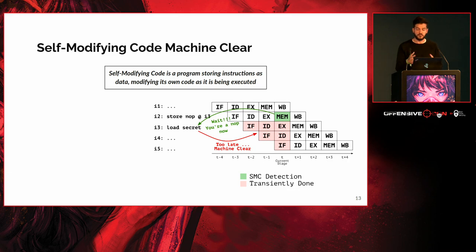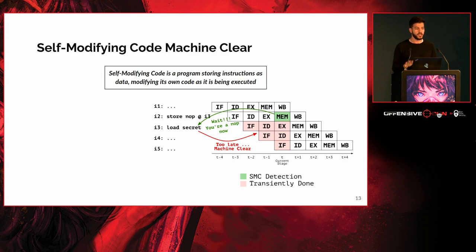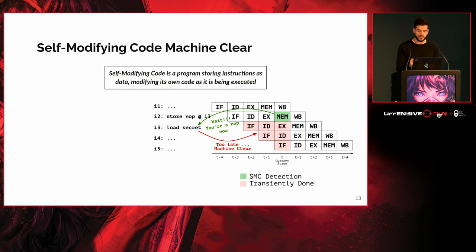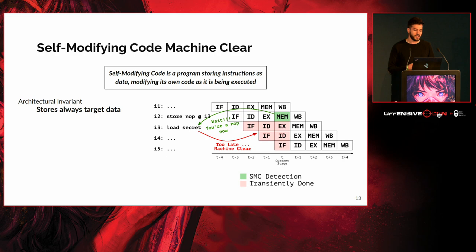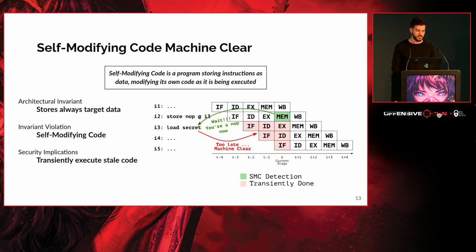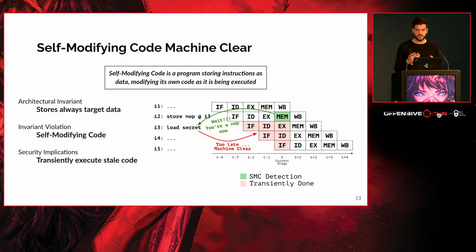Since detection of self-modifying code is not immediate, this creates a temporary window where the microarchitectural side effects of the speculatively executed instruction — the 'load secret' — can still be observed through caches and other CPU buffers. If an attacker has a side channel, they can observe what was executed as stale code and leak the information that was loaded. The architectural invariant here is that store instructions always target data addresses; this invariant is violated in self-modifying code, which targets code addresses instead, allowing an attacker to transiently execute stale code.